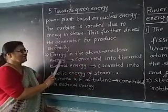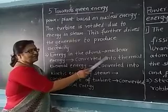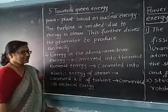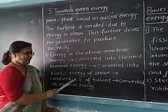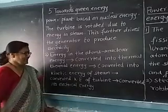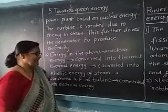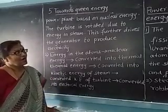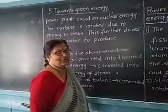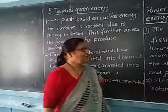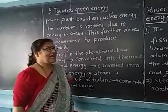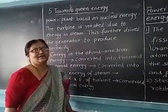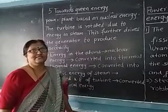There is production of nuclear energy, and this nuclear energy is converted into thermal energy. This thermal energy is further converted into kinetic energy of the steam. The kinetic energy of the steam is then converted into kinetic energy of the turbine, and that kinetic energy is finally converted into electrical energy. Steam is generated at very high temperature and pressure, rotating the turbines which are connected to the generator.